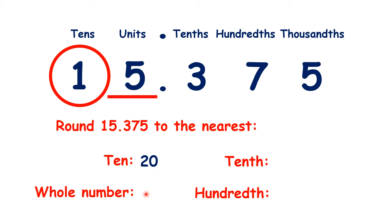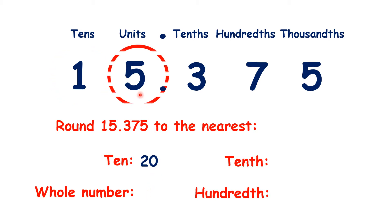For rounding to the nearest whole number, we find our units, look to our tenths, and we can see that we are rounding down, so we have 15.